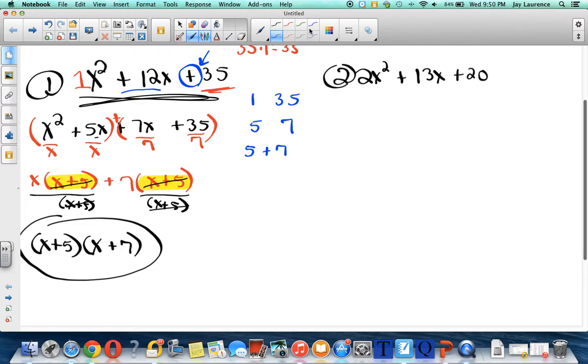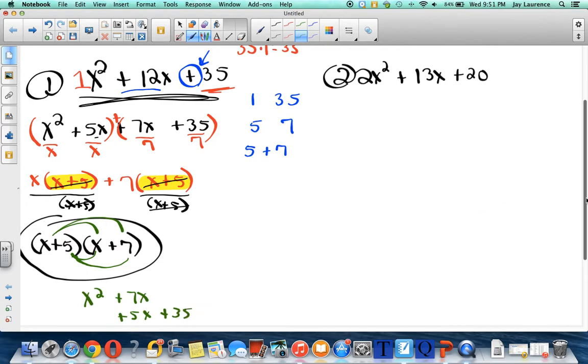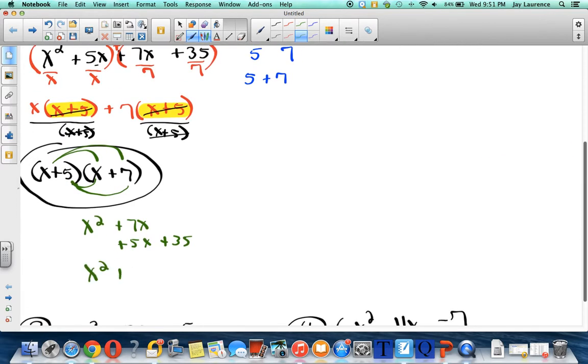There you go. I just factored this trinomial. Now to check your work, you can double distribute. Some of you will call it FOIL, I'll call it double distributing. I'll multiply x times x and get x², I'll multiply x times 7 and get a positive 7x, 5 times x get a plus 5x, and then 5 times 7 get a plus 35. And so when I do that, I get x² + 12x + 35. Now remember, this is only my check. My actual answer is this. If I factored it properly, then I will get what I started with.